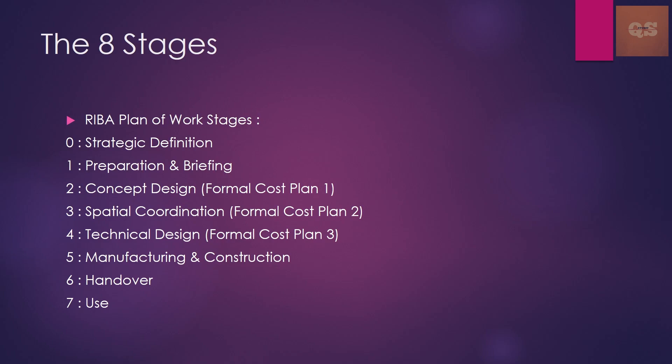The eight stages are: Stage 0 - Strategic Definition, Stage 1 - Preparation and Briefing, Stage 2 - Concept Design, also called Formal Cost Plan 1, where a little bit of detail will be available about the project. Then Stage 3 - Spatial Coordination, where more design details and schematics will be available — around 20 to 30 percent of details. Stage 4 - Technical Design, which is Cost Plan 3.